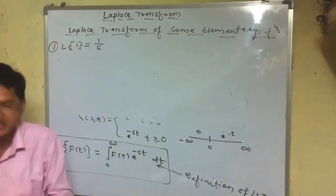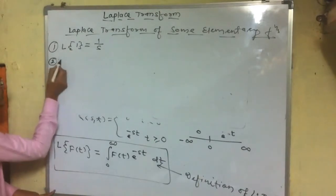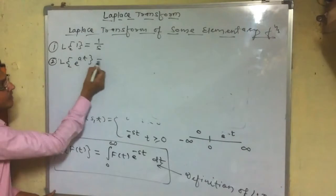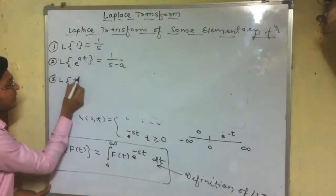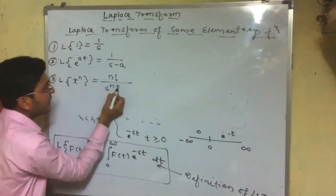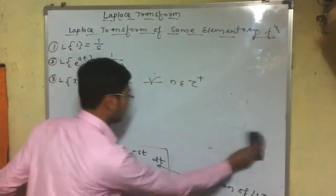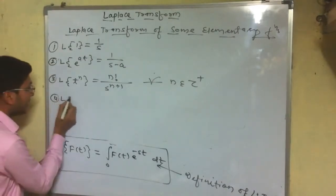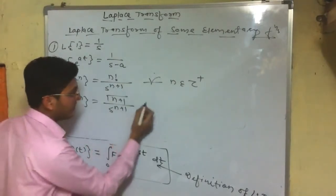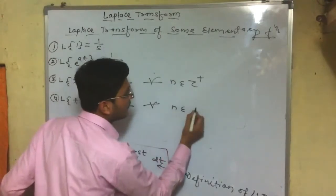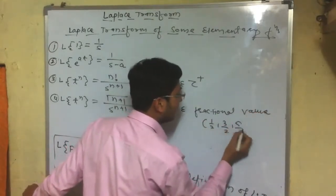The first elementary function is 1: Laplace of 1 is 1/s. The second is Laplace of e to the power at, which is 1/(s − a). The third is Laplace of t to the power n, which is n factorial divided by s to the power n+1, for all positive integer n. For fractional values of n such as 1/2, 3/2, 5/2, it equals Γ(n+1) divided by s to the power n+1.